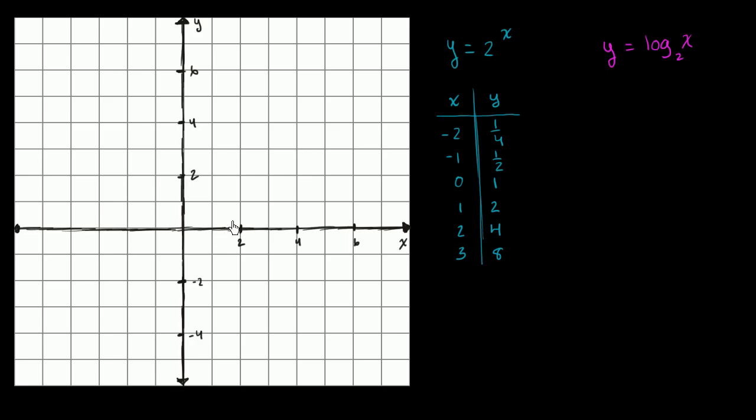So let's graph that. 2 to the third power is 8, 2 to the second power is 4, 2 to the first power is 2, 2 to the 0 power is 1, 2 to the negative 1 power is 1 half, 2 to the negative 2 power is 1 fourth, and even 2 to the negative 3 power is going to be 1 eighth.